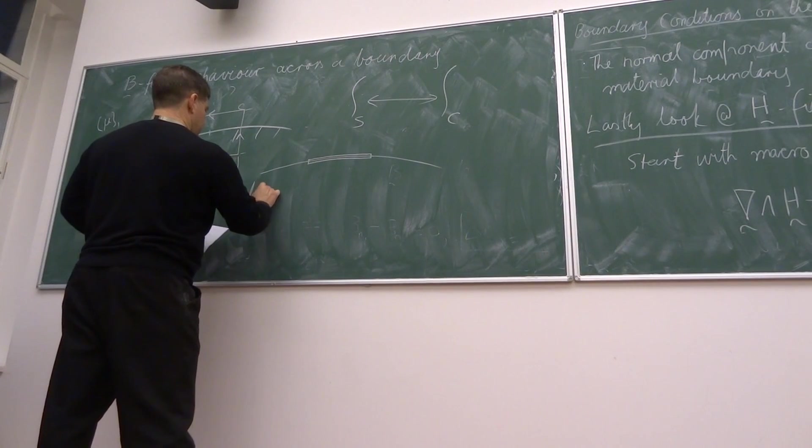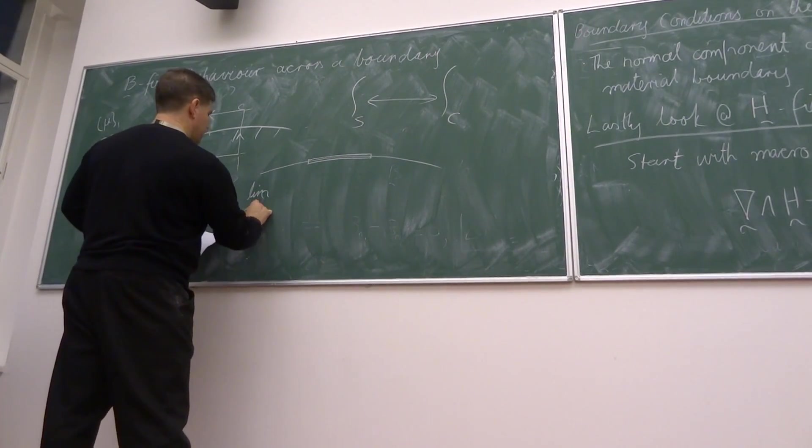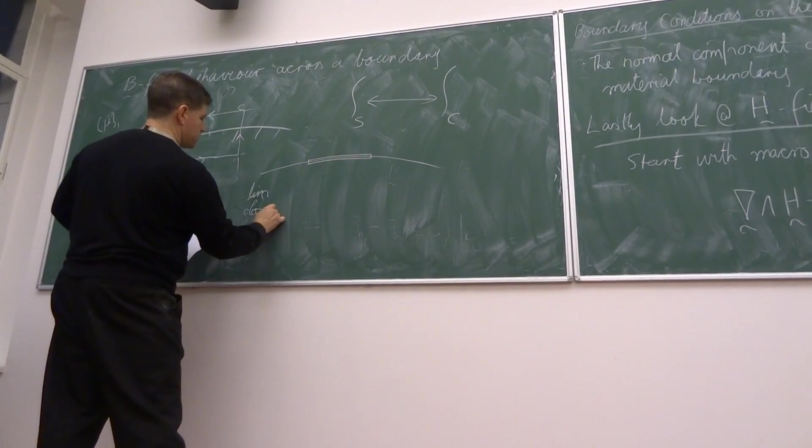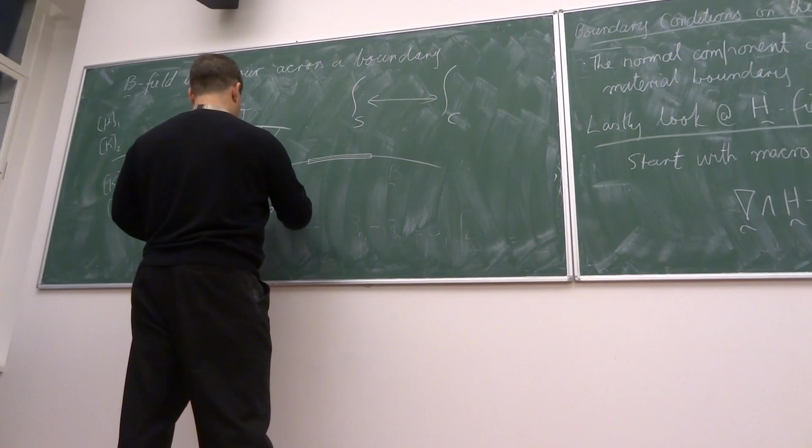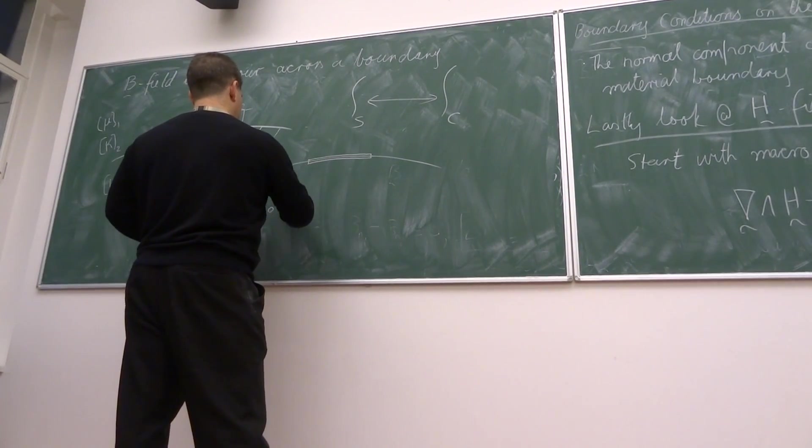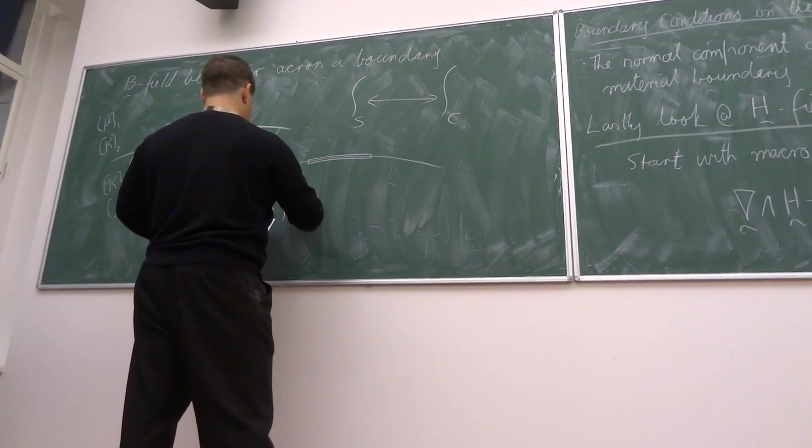So the limit as delta sigma goes to zero on our closed path of... So the limit...